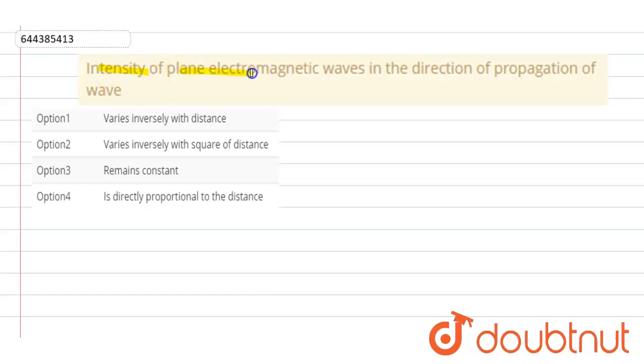Intensity of plane electromagnetic waves in the direction of propagation of wave. This question is based on the chapter electromagnetic waves. Now, we know intensity is defined as the power emitted per unit area.